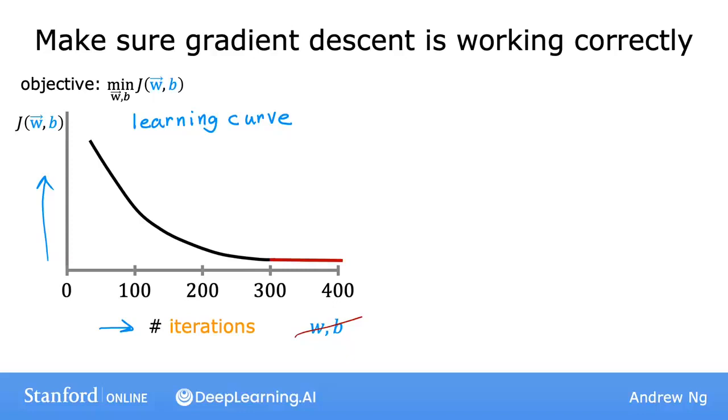Concretely, if you look at this point on the curve, this means that after you've run gradient descent for 100 iterations, meaning 100 simultaneous updates of the parameters, you have some learned values for w and b. And if you compute the cost j for those values of w and b, you get this value for the cost j.